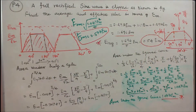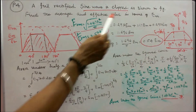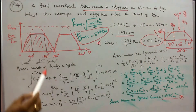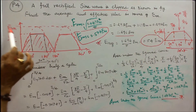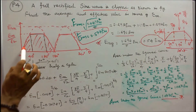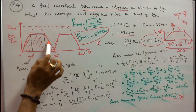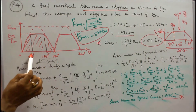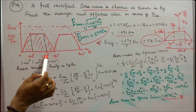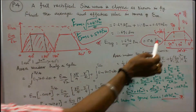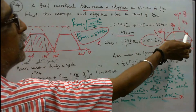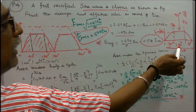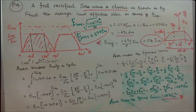Problem 4: A full rectified sine wave is clipped as shown in the figure. Find the average and effective value in terms of EM. The clipping level is EM divided by root 2. The half cycle consists of three intervals: pi/4, then (3pi/4 minus pi/4) in the middle flat region, then pi/4 again — that is 45 plus 90 plus 45 degrees, totaling 180 degrees (pi).